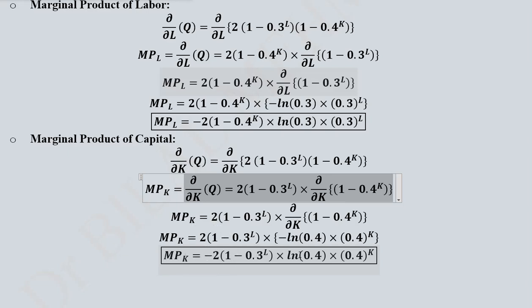There is a minus sign here but again when we calculate the natural log of 0.4 it will be a negative value making this a positive value. So in this way we will get a positive response from MPₖ. So MP_L and MP_K both are likely to be positive values.